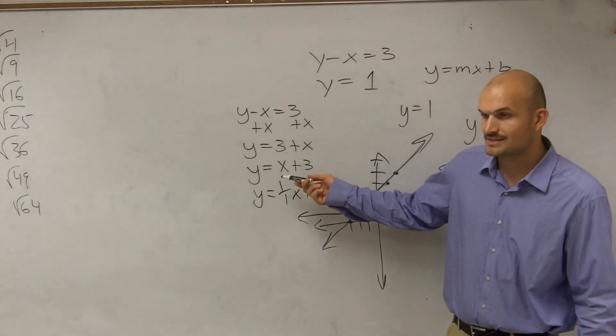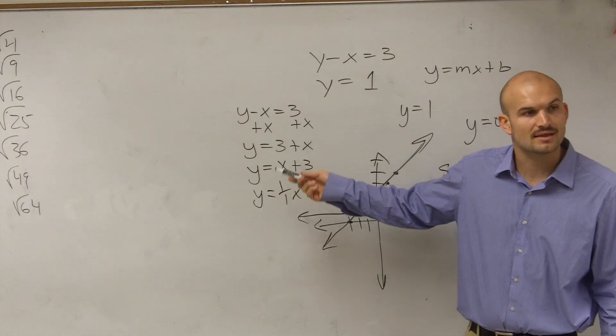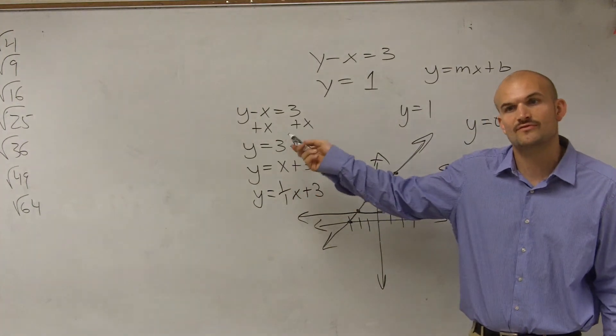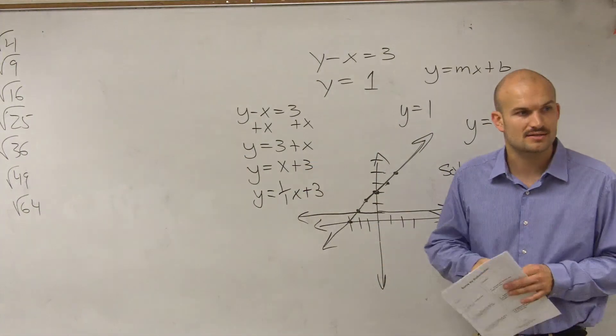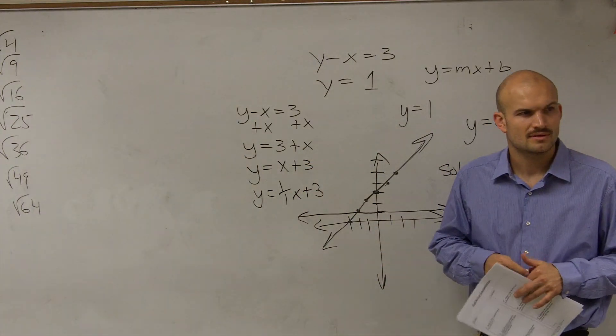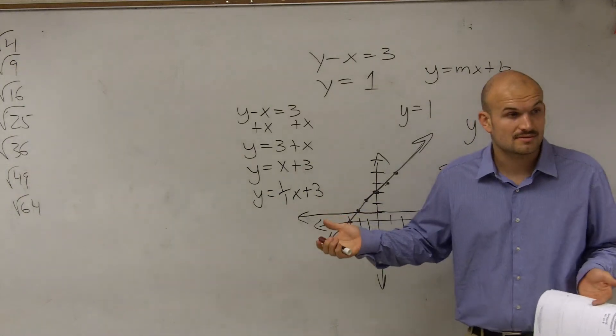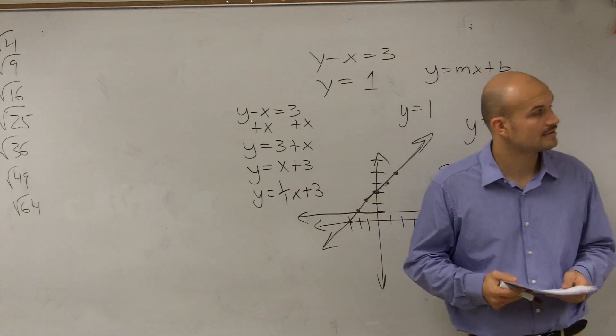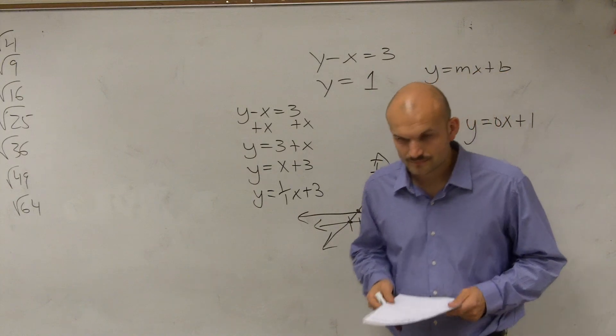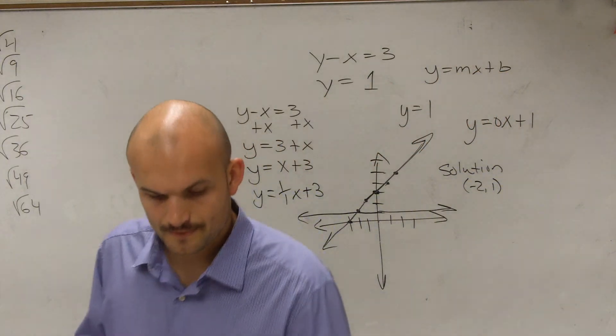Same thing with x. We don't write 1 times x, but unless we want to know what is the number in front of x, then it might be helpful to write 1 times x. Does that make a little sense? Just note, what's 1 times x? X. So there's no problem in just having 1 in front of it. All right? Okay.